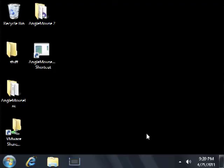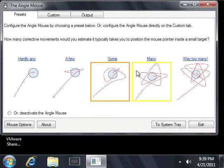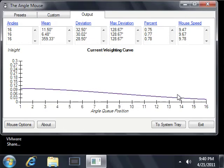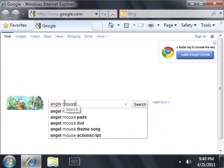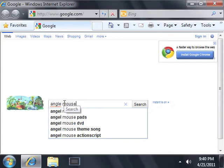The Angle Mouse software is available as a free download on our website. This software allows the user to activate the Angle Mouse, configure its settings, monitor its performance, and use the Angle Mouse to interact with standard Windows programs. The Angle Mouse software works with any standard mouse or trackball and can be customized to suit the individual preferences of the user.